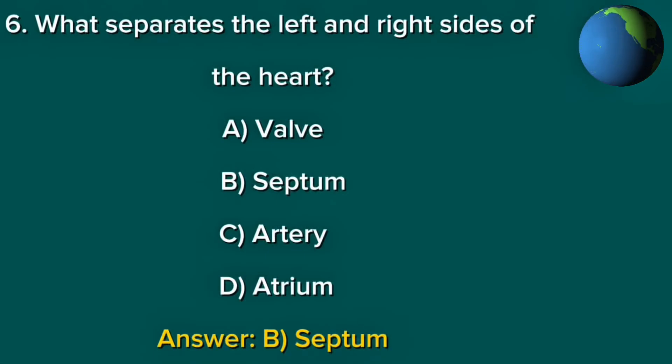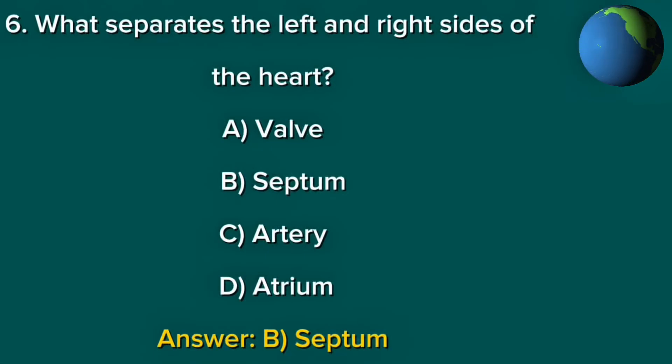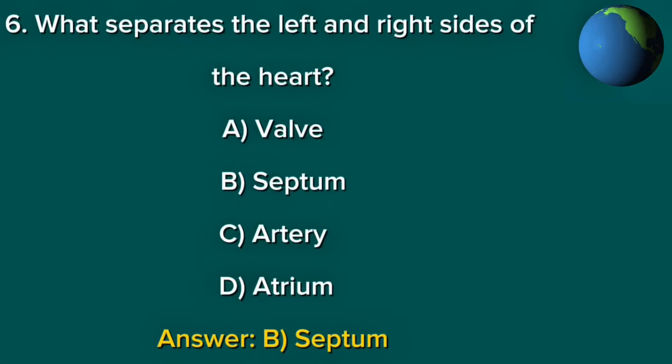Question 6. What separates the left and right sides of the heart? A. Valve. B. Septum. C. Artery. D. Atrium. Answer: B. Septum.